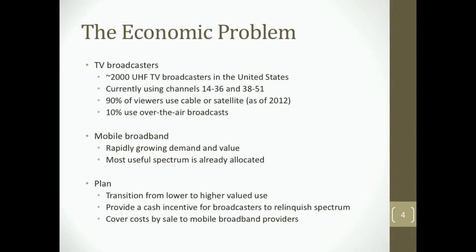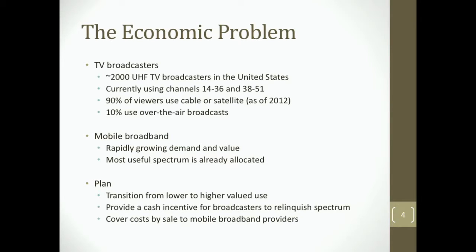The economic problem is quite complicated. There are about 2,000 UHF television broadcasters in the United States; counting Canada, about 3,000. We're currently using channels 13 to 51, missing channel 37, which is used for medical devices and radio telescopes. As of 2012, 90% of U.S. TV viewers viewed their signals using cable or satellite service. So what used to be very valuable spectrum for delivering television signals is now largely unused over-the-air — it's sort of a waste to have this large quantity of high-value spectrum used for television broadcast.